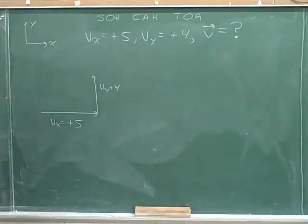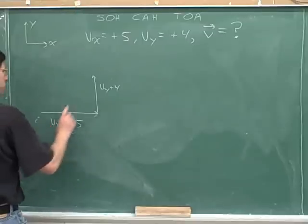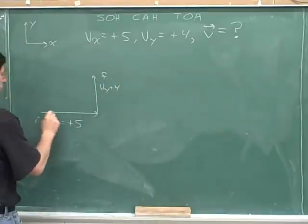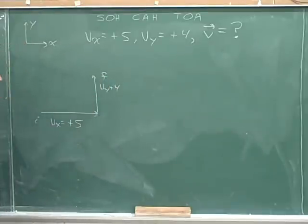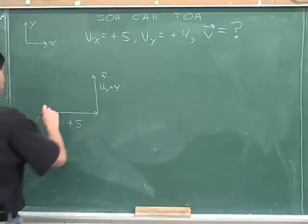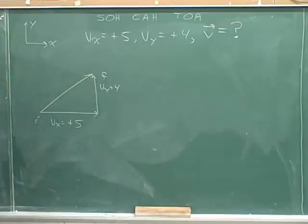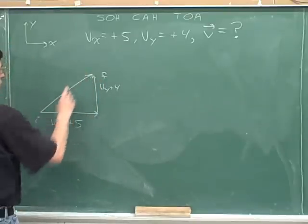So make sure that you drew v sub y over here. And now we need to draw the overall vector. Well, we could think that this is our initial point and this is our final point. When we started drawing the components, we started here and ended up here. The overall vector should point from the initial point to the final point. And it should form the hypotenuse of your triangle. So here's the correct overall vector.